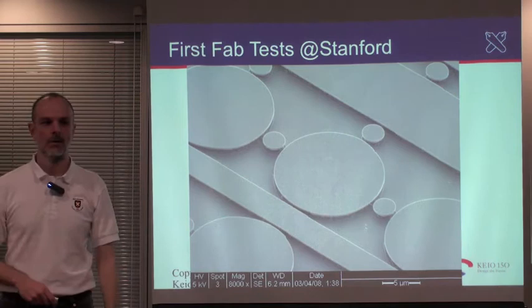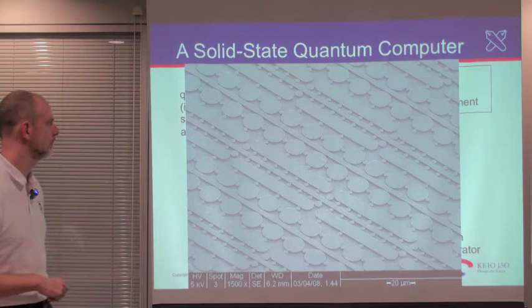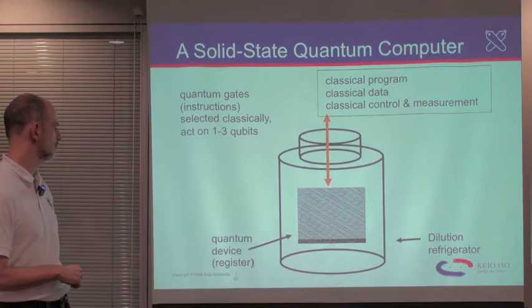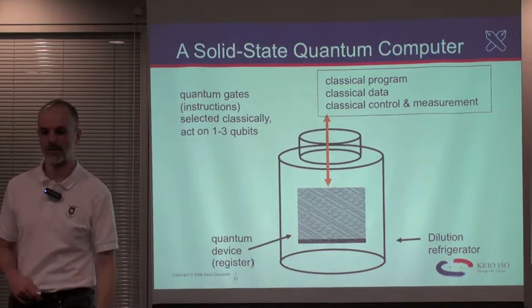Looking at the larger scale system, this gives us a solid state quantum computer using semiconductor nanophotonics. We need to run it at cryogenic temperatures, putting it inside of a dilution refrigerator. That gives us the quantum device, and of course it must be coupled to the outside world where we provide classical programming, classical data, and classical control and measurement for the entire system.